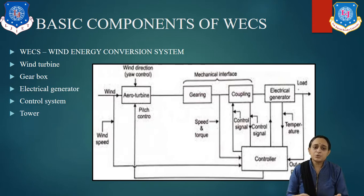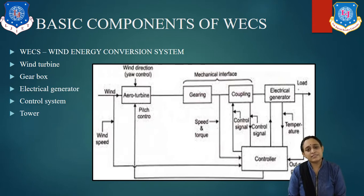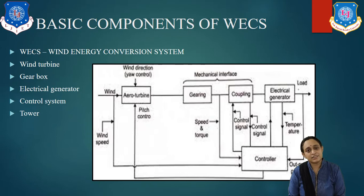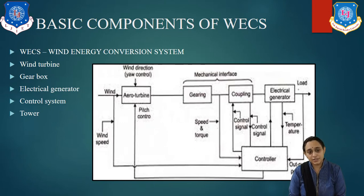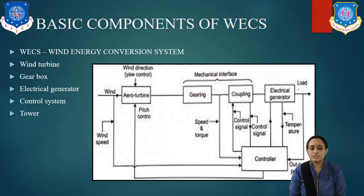By the end of the chapter, you will understand that the wind energy system converts the kinetic energy of wind into mechanical energy and finally into electrical energy. The main components of WECS are: wind turbine, gearbox, electrical generator, control system, and tower.